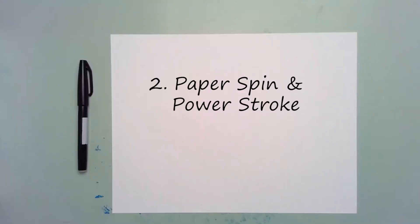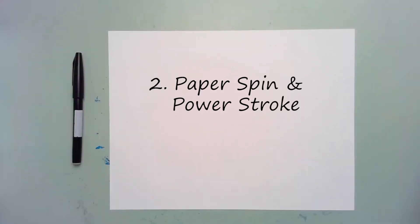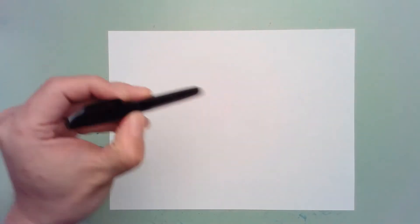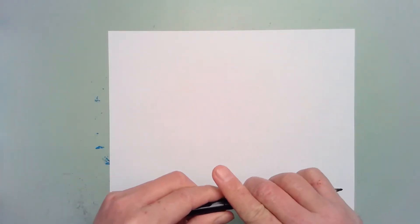In addition to your pen grip and locked wrist, there are two other fundamental drawing habits that are also very important for you to develop. They involve spinning your paper as you draw and executing line strokes away from your body.